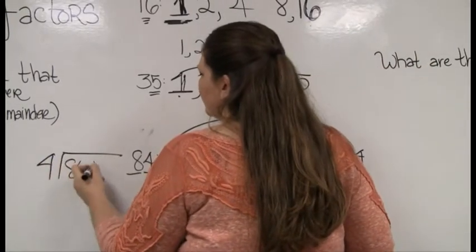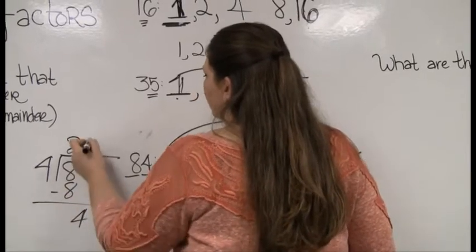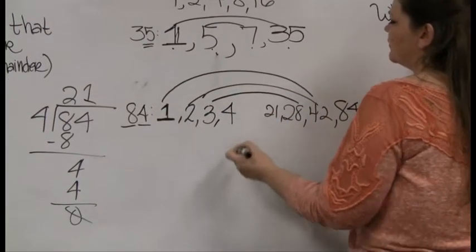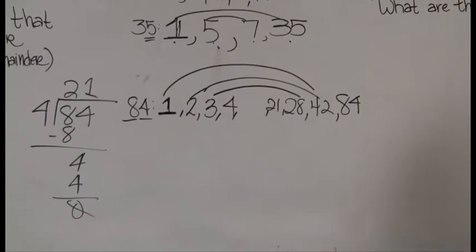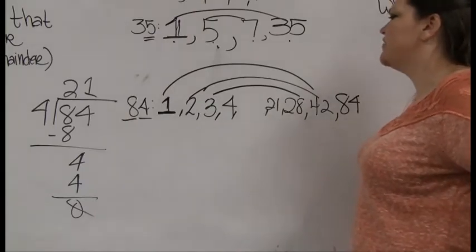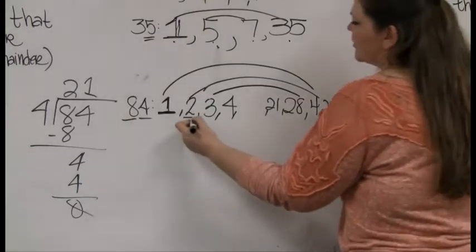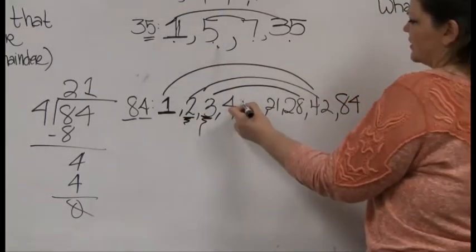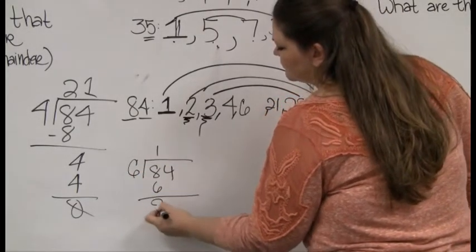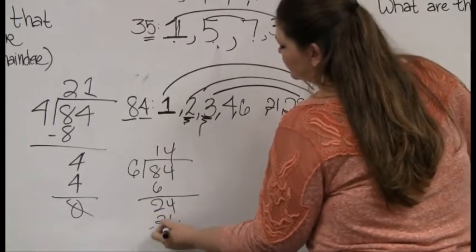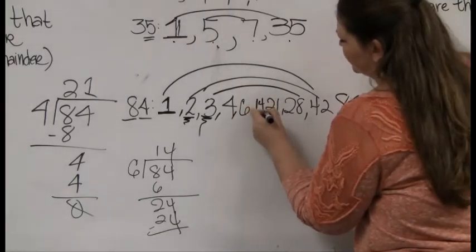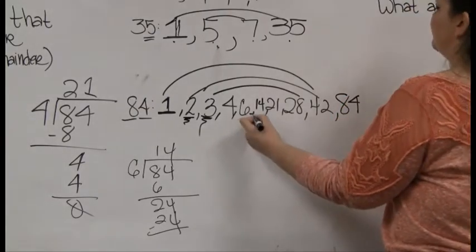Does 84 divide by 4? Let me check — yes, it goes in perfectly 21 times. So I get 4 and 21. Does 84 divide by 5? It sure doesn't — doesn't end in 5 or 0. Next number to check is 6. Since I see both a 2 and a 3 in this list, 6 is going to be in there as well. 6 goes into 84 fourteen times.